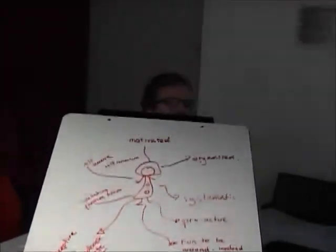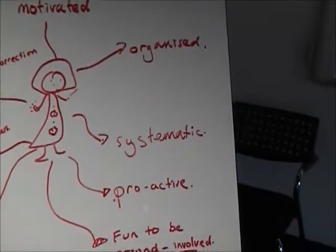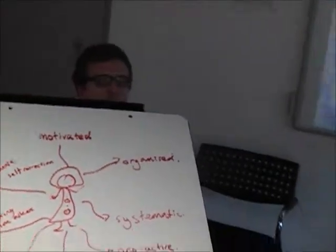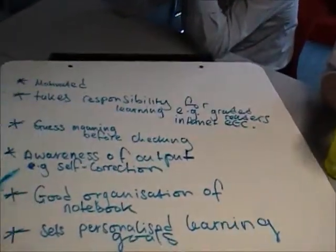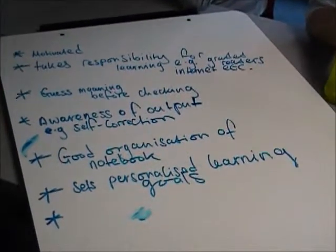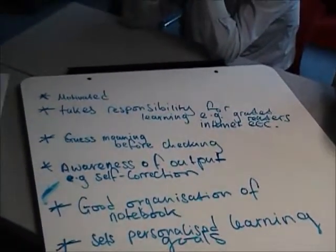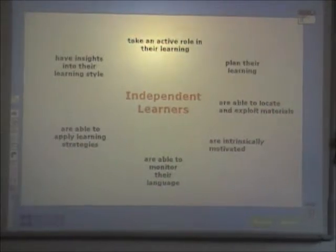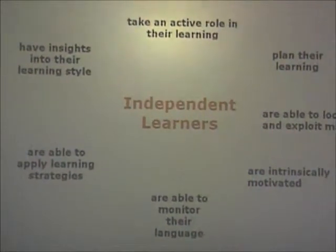Locating materials — yes. Being systematic, you know, in organising how you're going to learn — that could be some kind of learning strategy. Planning their learning as well — they're similar. So basically what we're going to do today is look at five mini case studies. That's not to take away from the fact that you've been integrating all this kind of stuff into your teaching quite regularly. These case studies are designed to highlight key aspects of learner autonomy.